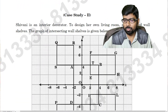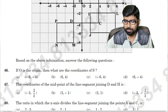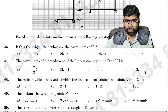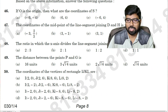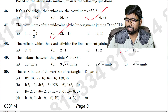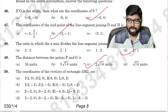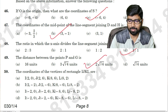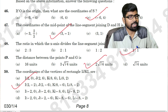Now this is one more case study — this is the graph, you can see here. Question number forty-six: option C. Question number forty-seven: option B. Question number forty-eight: option D. Question number forty-nine: option C. Question number fifty: option B.